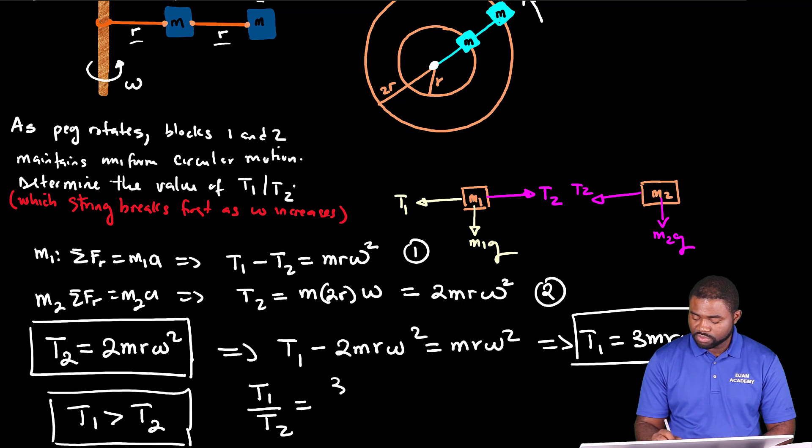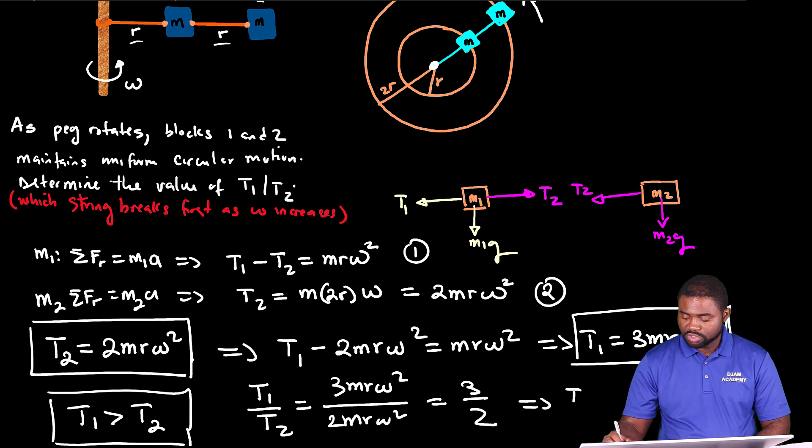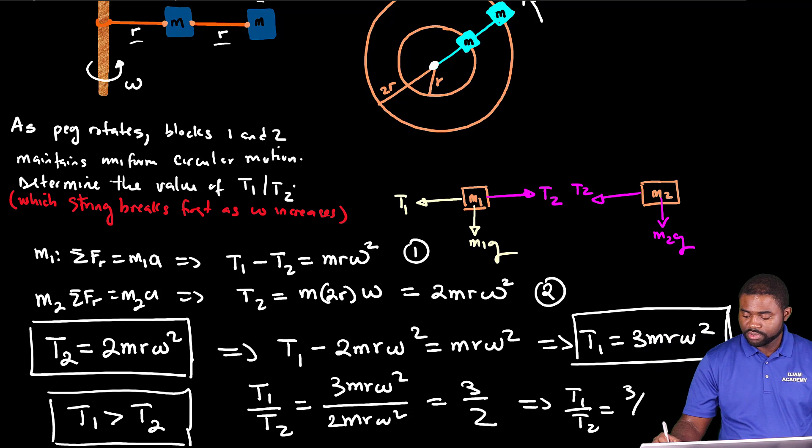But the question demands us to calculate T1 over T2. This will be equal to 3MR omega squared divided by 2MR omega squared, which is just going to be equal to 3 over 2. And this will be our answer T1 over T2 is equal to 3 over 2.